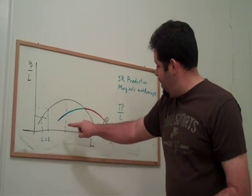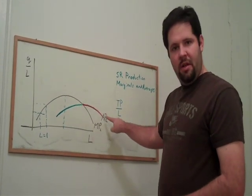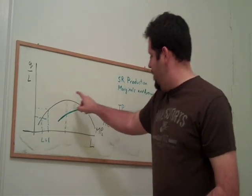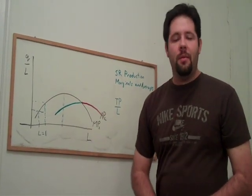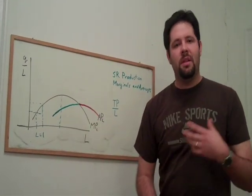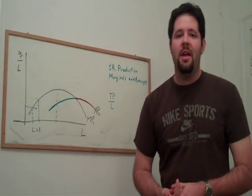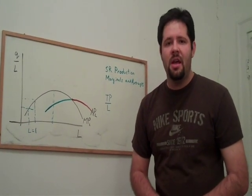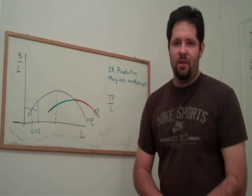As you can see, we get this same inverted U shape for the average product. And it comes from this inverted U shape from the marginal product. This induces it through this relationship between a marginal and an average. The relationship between marginals and averages is always this way.